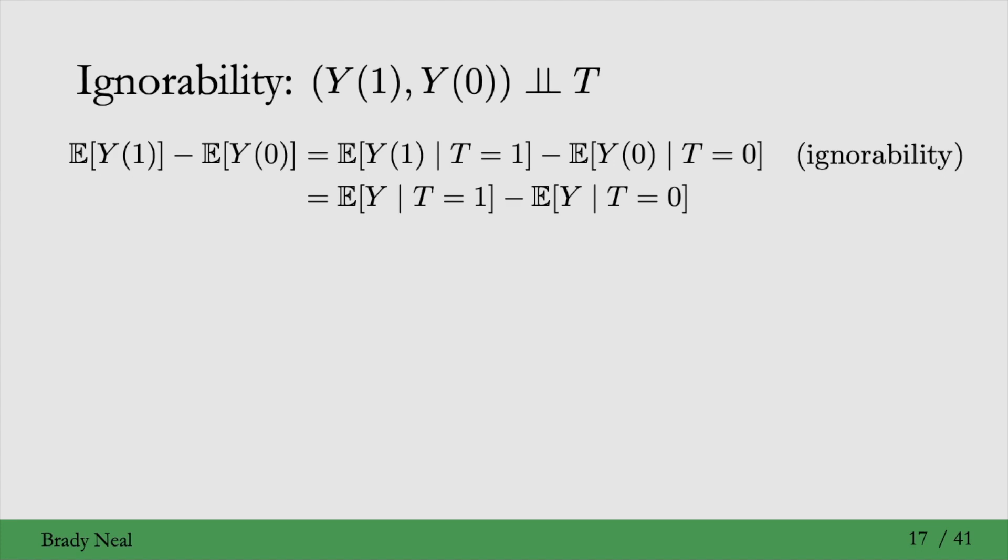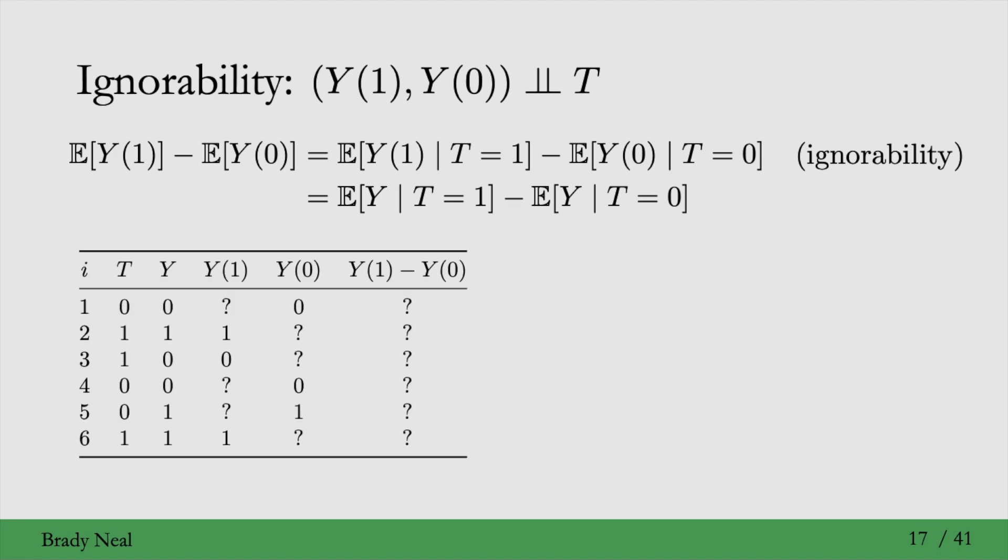One way to see why this assumption is called ignorability is to look at that missing data variable example that we had before. And these question marks, if we were to just ignore them, and then compute the means here, and take the difference, then we get the ATE under the assumption of ignorability. So, if ignorability is true, then we can just ignore the question marks.